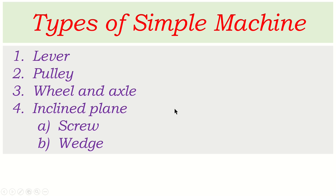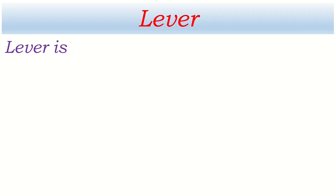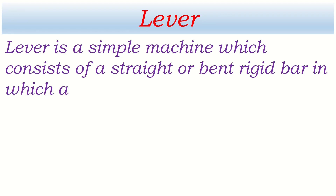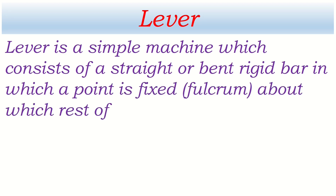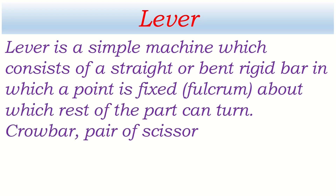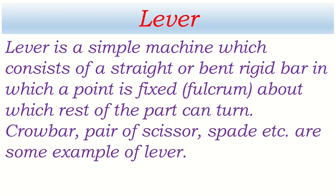Our focus is on velocity ratio, but I want to first define the simple machine, show you the figure, and then tell you about the formula of velocity ratio. Let's go through lever. Lever is a simple machine which consists of a straight or bent rigid bar in which a point is fixed. The fixed point is called the fulcrum, about which the rest of the part can turn. Crowbar, pair of scissors, spade etc. are some examples of lever.